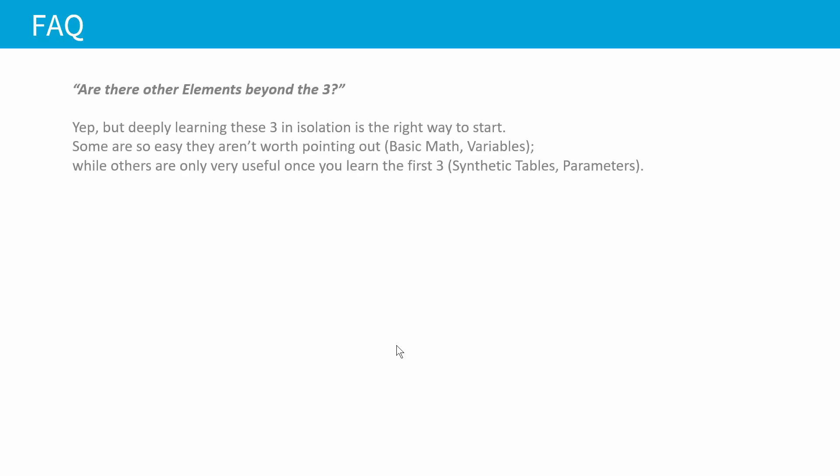Okay. So frequently asked questions, and I just gave one of them away, but we'll go through these. First question, are there other elements beyond the three? Yes, yes, there are. But deeply learning these three in isolation is the correct way to start. Some of the other elements are so easy that they aren't really worth pointing out. Things like basic math and variables, we don't want to focus on those. And there's other elements that are really only useful after you've learned the first three things like synthetic tables and parameters. I don't want to say that they're not helpful, but until you know those first three backwards and forwards, they're not really going to be useful for you. Okay. So we're going to focus on the three.